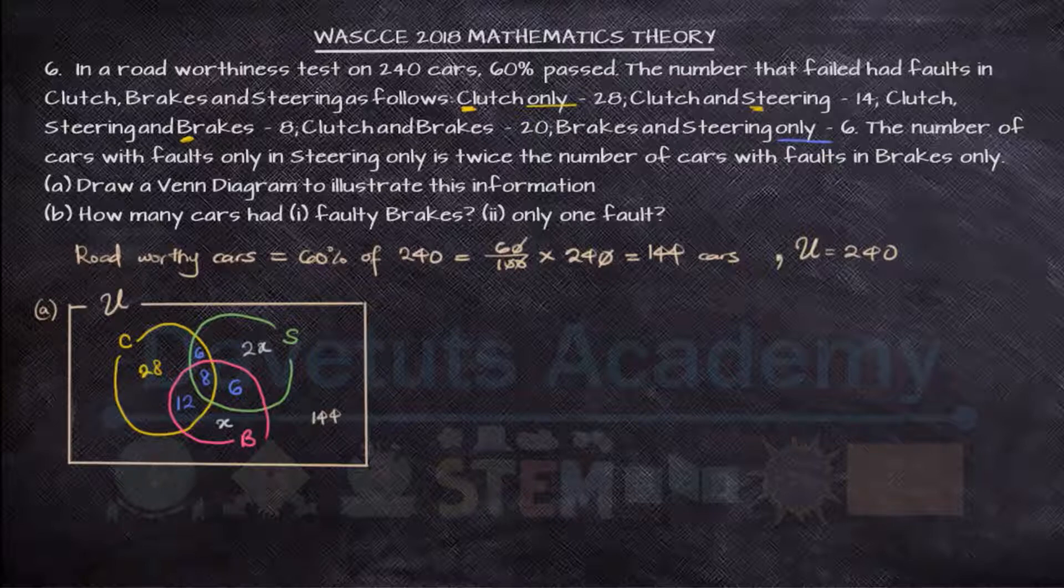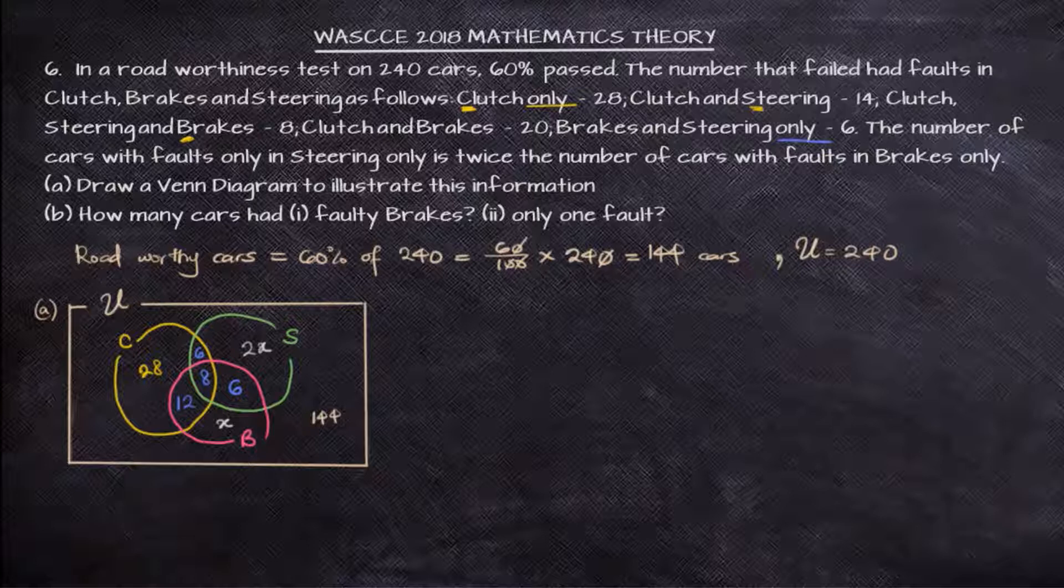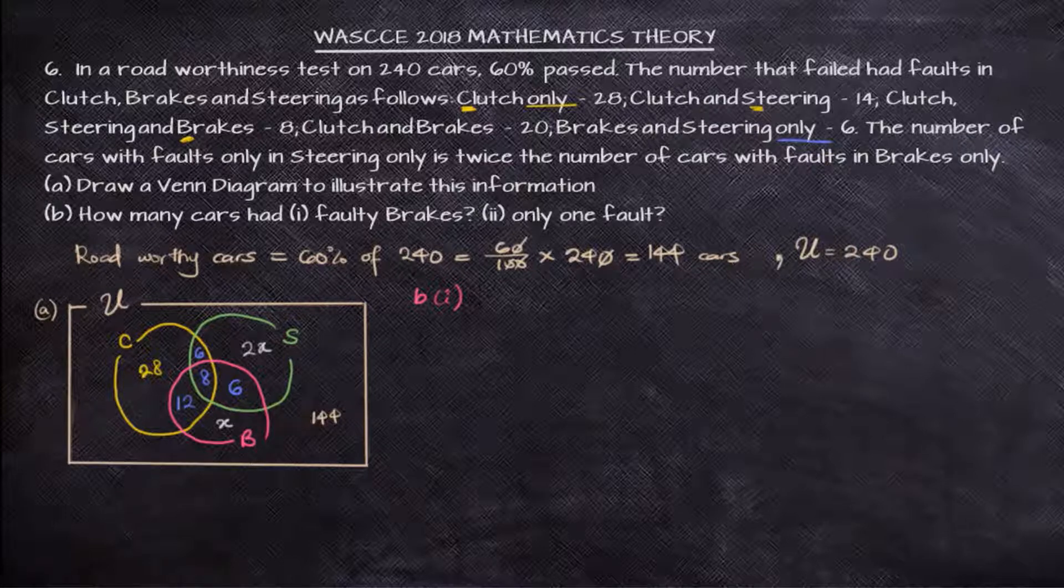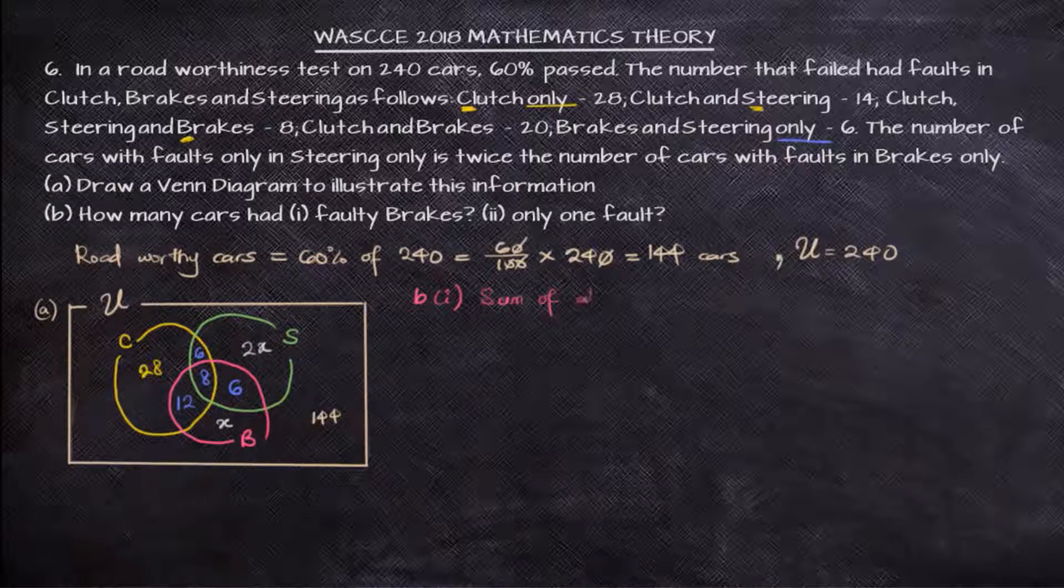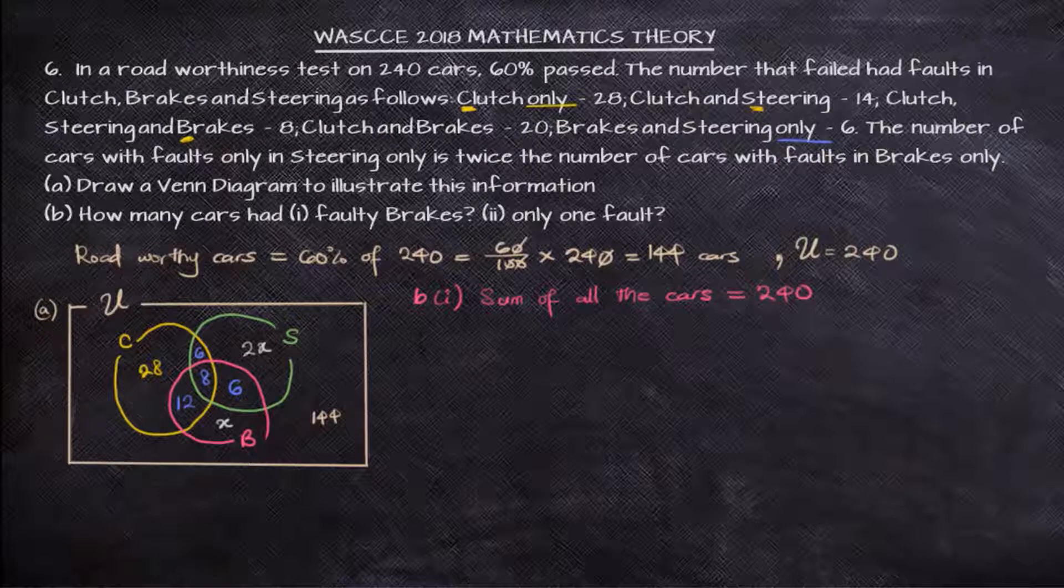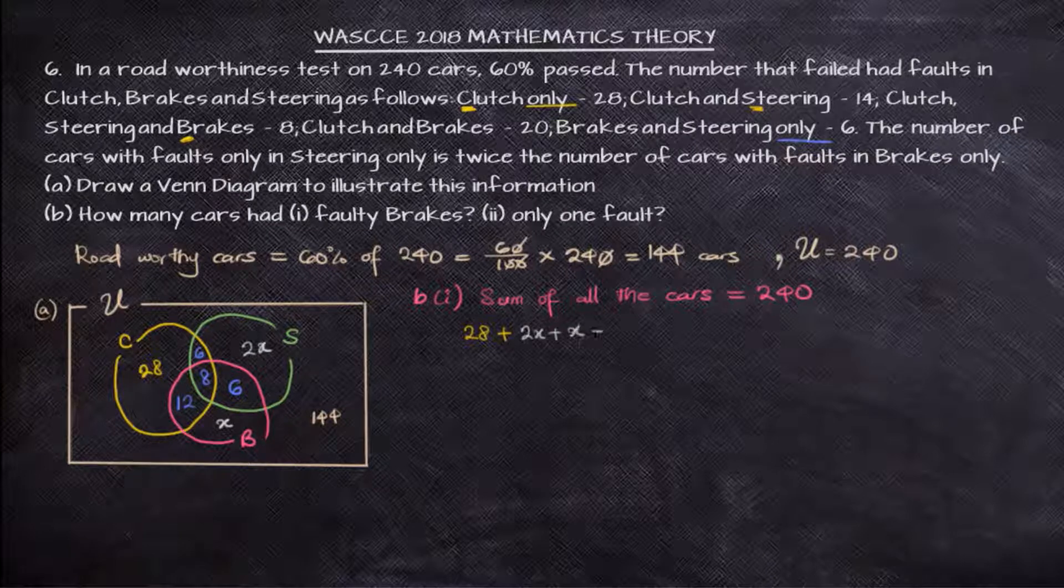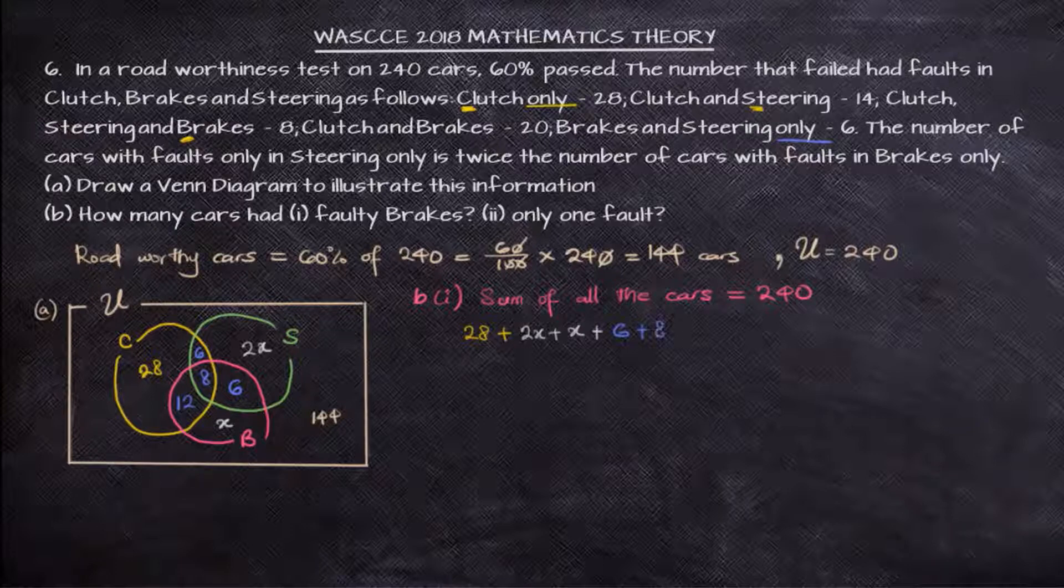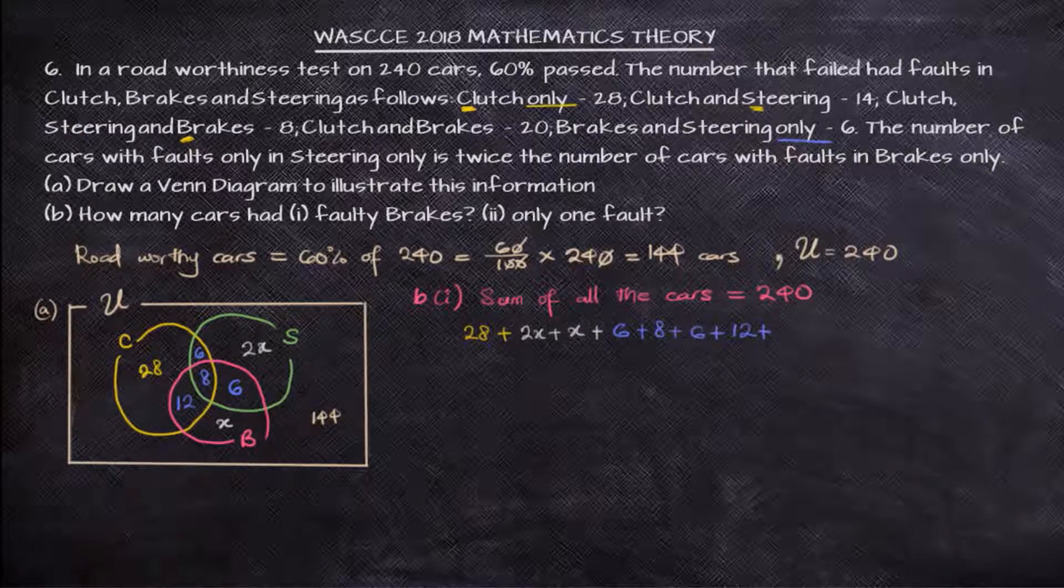And then we can go ahead to find the other two questions that we are asked to find. Now we are asked to find how many cars had faulty brakes and how many cars had only one fault. But here we are noticing that there is a variable x that we need to evaluate. And we know that when we sum all of these statistics concerning the cars, they are all going to sum up to 240, which is the total number of cars that we are considering. So 28 plus 2x plus x plus, now the blue statistics,